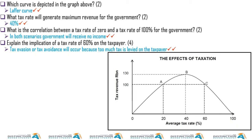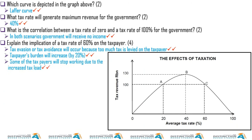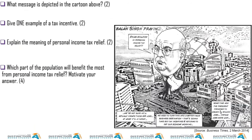20 percent will be better — it will encourage people, they are not paying too much. 60 percent would actually discourage people, so the economy won't grow as much. Tax evasion or tax avoidance will occur because too much tax is levied on the taxpayer, burdening them — and will increase by 20 percent. Some taxpayers will stop working due to the increased tax load.